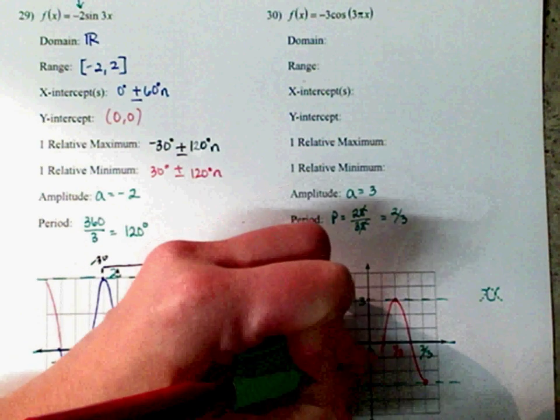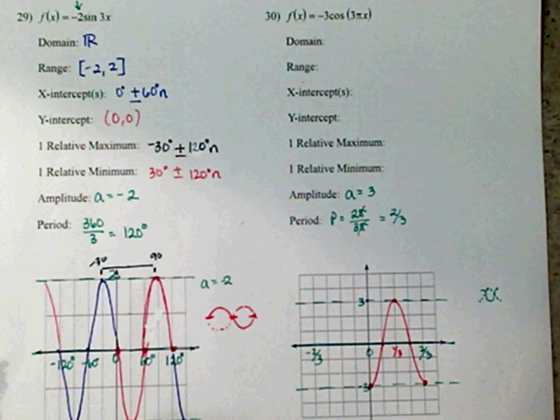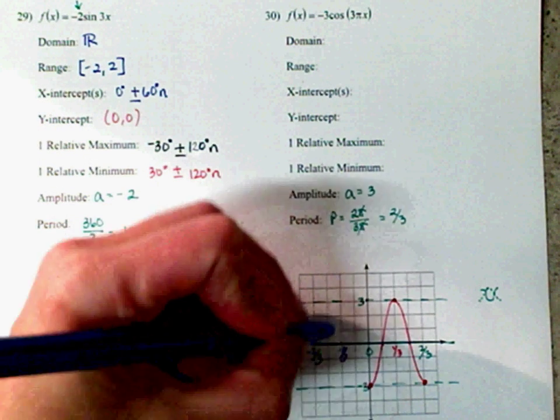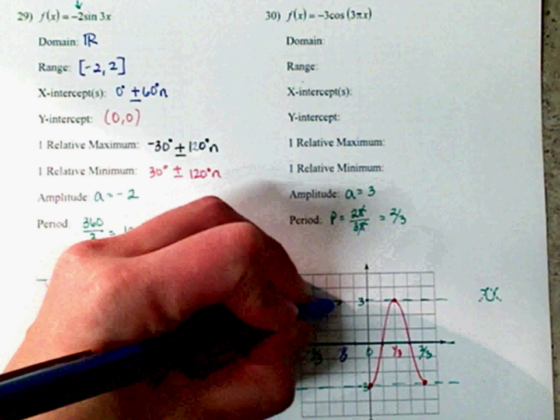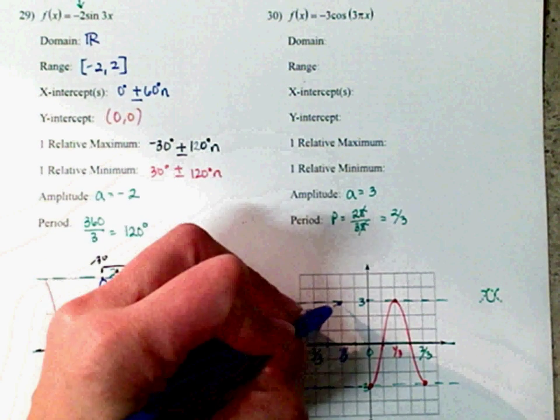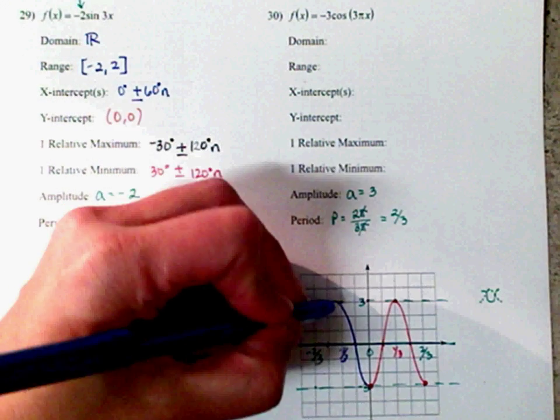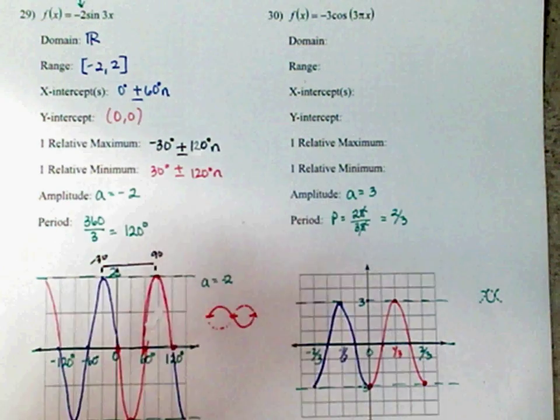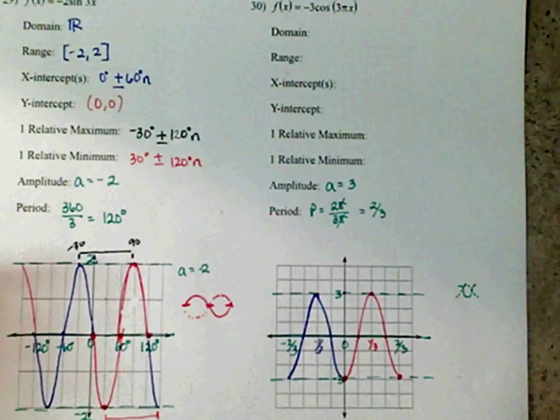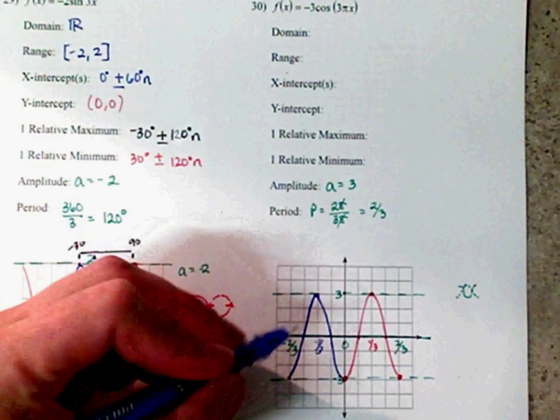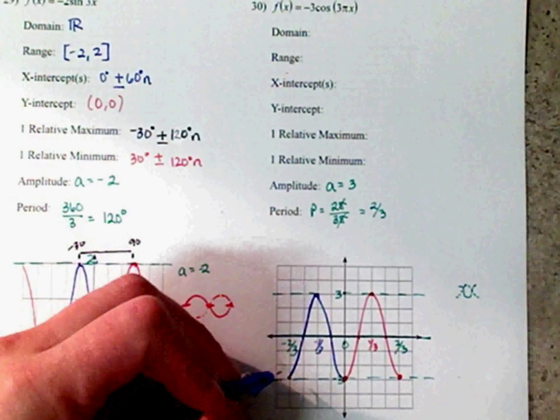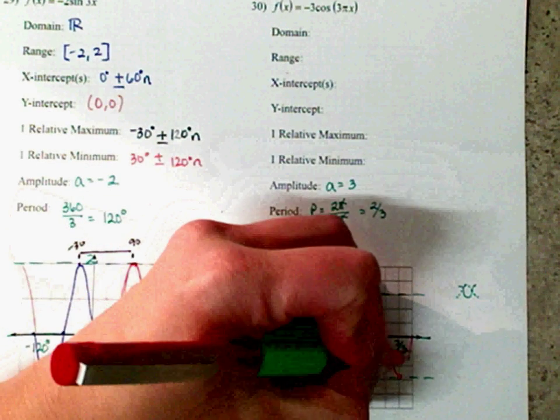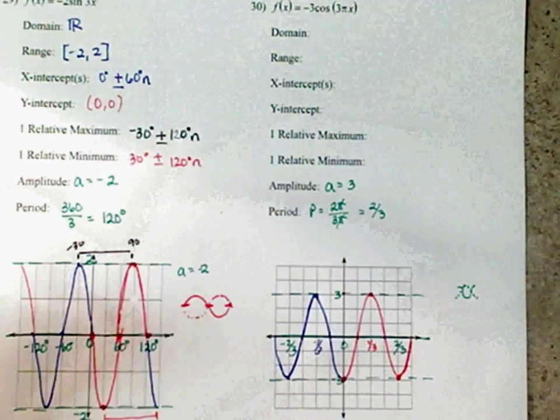I'm going to use the graph to help me. Go the other way as well. This is negative 1 third. See, I've got that shape. And there you have your cosine graph. And it actually keeps going. Because it doesn't really stop. So, there's my graph. Let's answer our question.